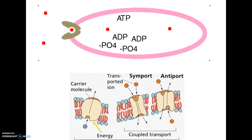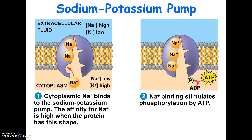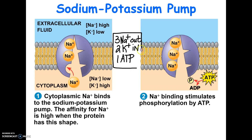The most common example of active transport is what's called the sodium-potassium pump. Every cell has the sodium-potassium pump. It pumps three sodium ions out, two potassium ions in, and it requires one ATP to do that. If you can remember this, you could probably answer most any question you were asked about the sodium-potassium pump.